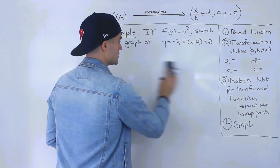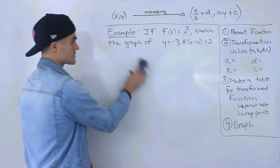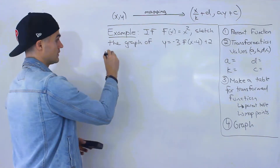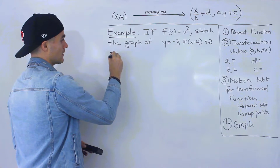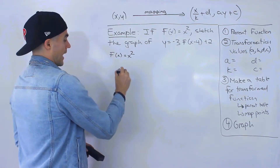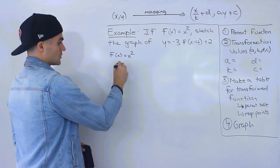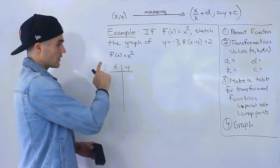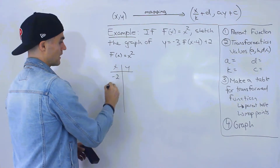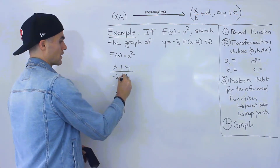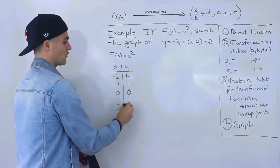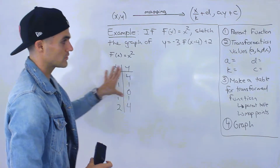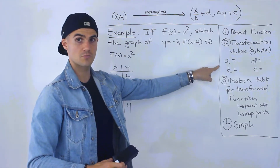So now let's go through these steps. Number one: what's the parent function? In this case, it's given — it's x squared. We can make a table of values for x squared. The table of values was x: negative 2, negative 1, 0, 1, 2, and then y: 4, 1, 0, 1, 4. That's the parent table, and then we're going to transform it depending on what the transformation values are.